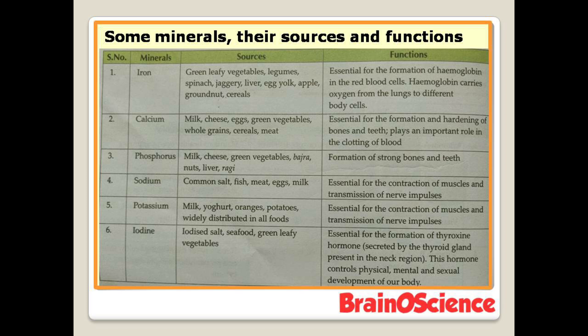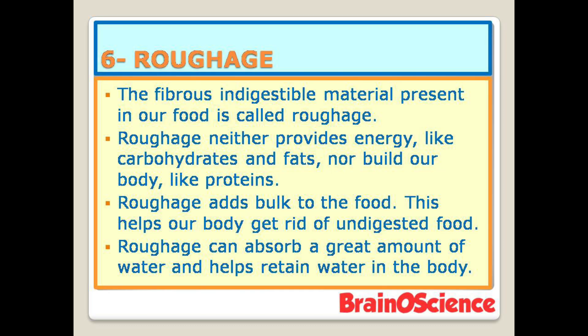Iodine sources are iodized salt, seafood, and green leafy vegetables. Iodine is essential for the formation of the thyroxine hormone, which is secreted by the thyroid gland located in the neck region. This hormone controls the physical, mental, and sexual development of our body.